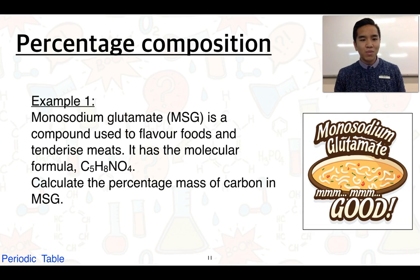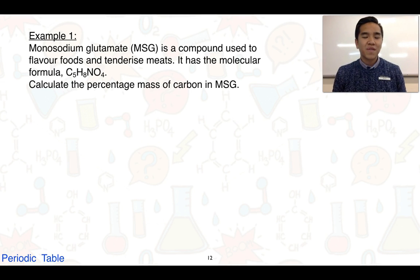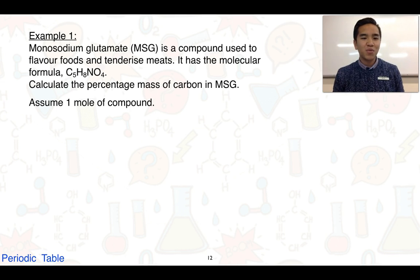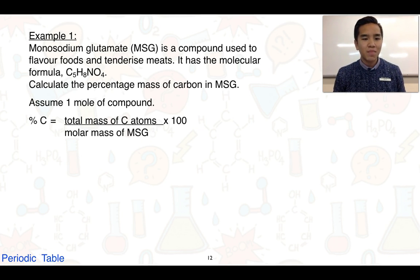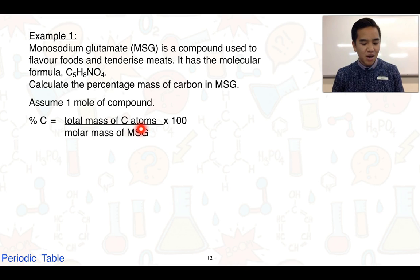The first example looks at MSG, or monosodium glutamate, a compound used to flavour foods and tenderise meats. We're given the molecular formula, and the question asks us to calculate the percentage mass of carbon in MSG. To do that, we first assume that we have one mole of the compound, so we can work out the mass of each atom. The percentage mass of carbon equals the total mass of the carbon atoms divided by the molar mass of the whole compound, multiplied by 100 to convert it into a percentage.